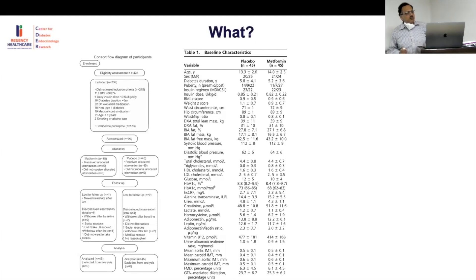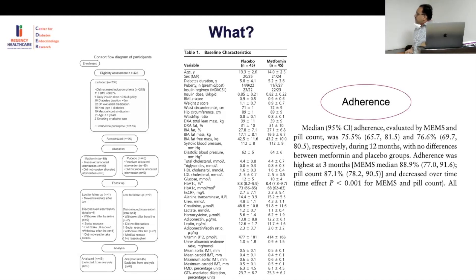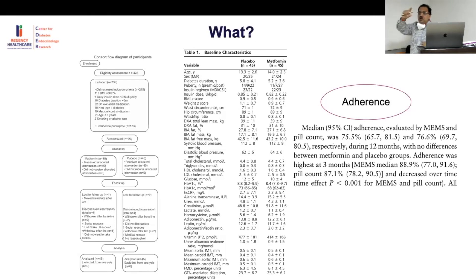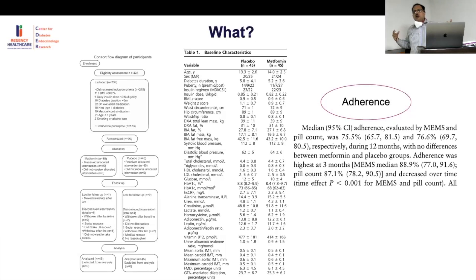Adherence was assessed by pill count — patients returned pill boxes and pills were counted. The investigators acknowledge it can't be 100%. In the first three months adherence was 88.9%, decreasing gradually over time — which is realistic. Claiming 100% adherence would be implausible.